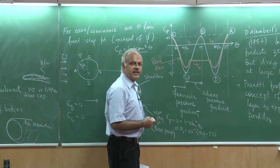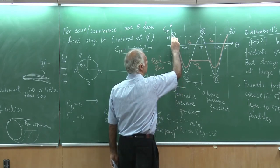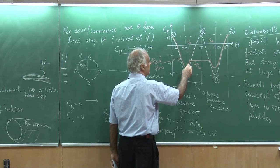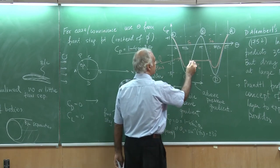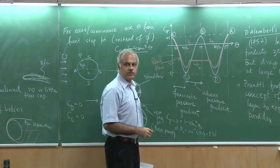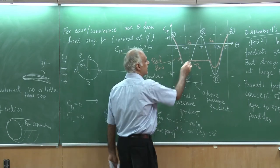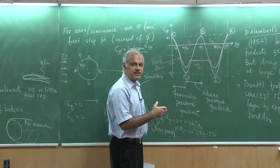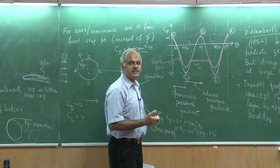The base pressure coefficient CpB is significant. On the windward side of the cylinder, there is high pressure which reduces at the shoulder. But on the leeward (downstream) side, the pressure does not recover to the high value — rather it stays at this low base pressure value. This imbalance between high pressure on the front face and low pressure on the rear face creates resistance, which leads to drag.